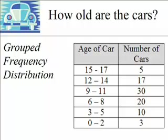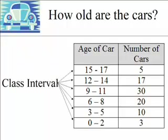Each one of these rows is referred to as a class interval. In this case, we have 6 class intervals: 0 to 2 is one class interval, 3 to 5 is another class interval, and so on.